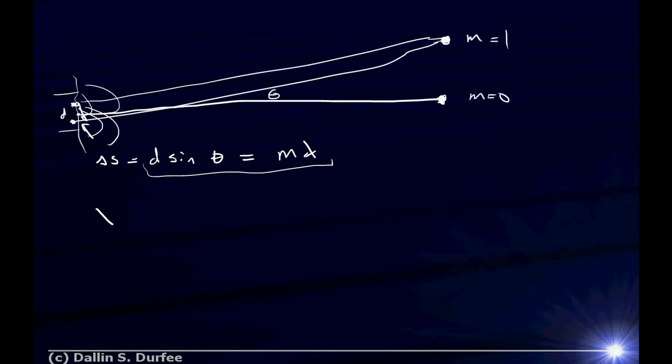So to find lambda, I just need to find the angles of two different maxima and find the difference between them, right? Well, I know I get one maxima at theta equals zero. And then the next one is a distance, what should we call this, y from that first one, alright? And we found y.